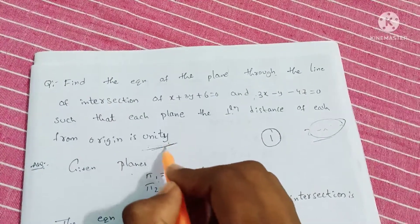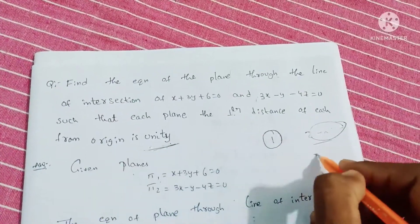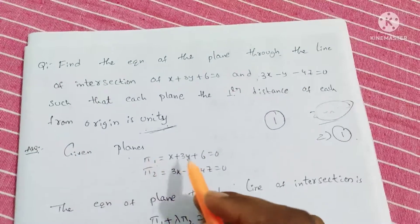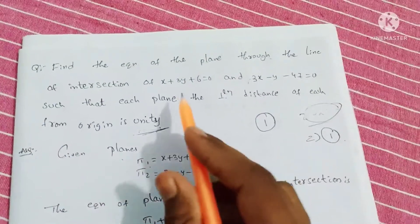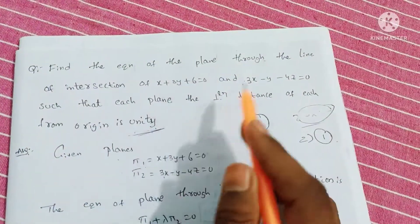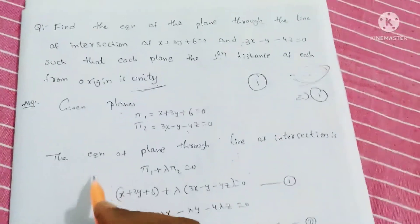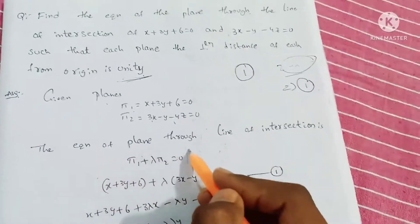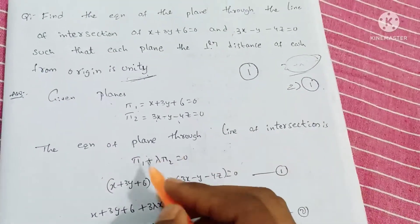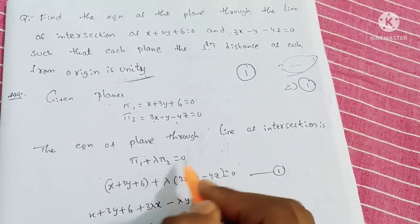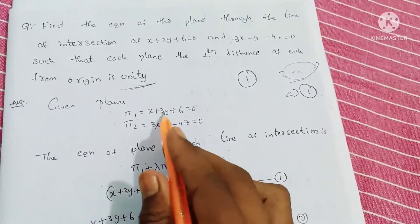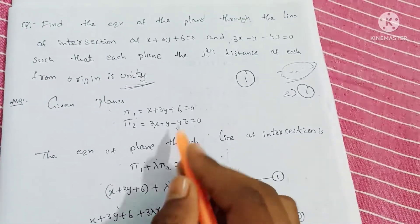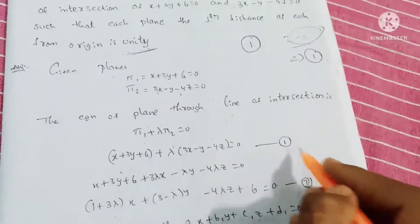Unity means distance is equal to 1. Given the two planes, using the formula: the equation of a plane through the line of intersection is Plane 1 plus lambda into Plane 2 is equal to 0. We call this equation 1.